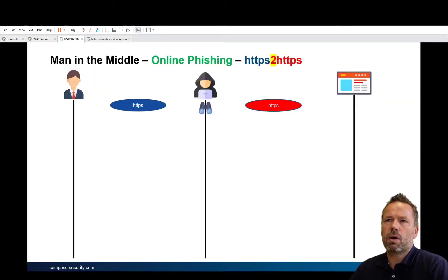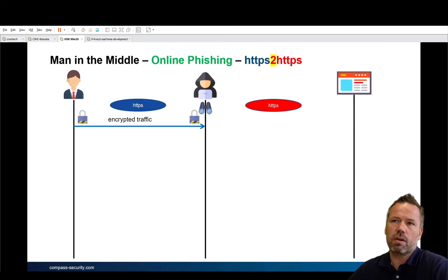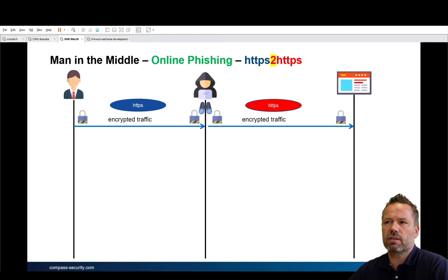There are two approaches. If the man-in-the-middle is offering an HTTP service, then the victim connects to HTTPS. A certificate error may occur, and depending on the victim's knowledge, they may accept or decline the server certificate. If the client accepts the HTTPS certificate, the traffic is forwarded to the final server via HTTPS.